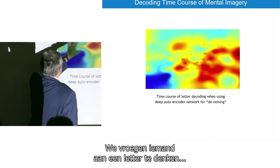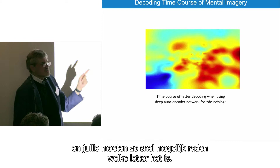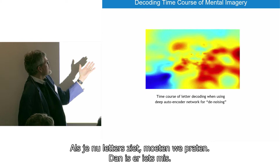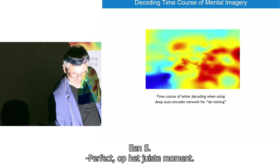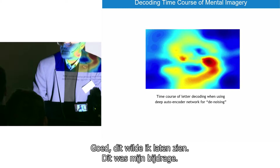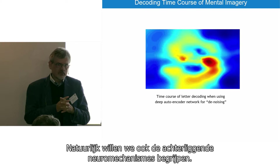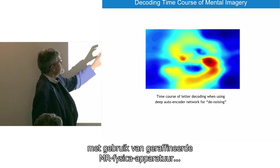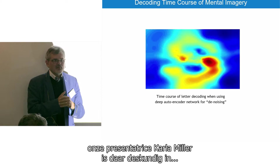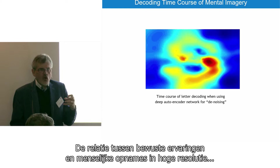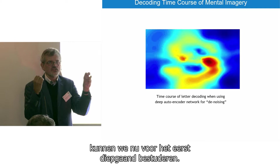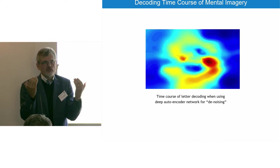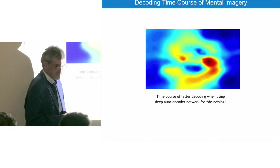You see in front what you currently imagine in your mind—as a real image. Here is a strange structure, and now we do this time-resolved: we ask a person to imagine a letter, and you can watch how it evolves. Of course, we want to also understand more the neural mechanisms behind that, and that's what Sascha von Albada will do in the second part of this presentation. I hope you have seen that this new technology, using very sophisticated MR physics machines, can probe a physical system—the brain—and relate conscious experiences with high-resolution human recordings. For the first time, it is now possible to study that relationship in a very deep way.